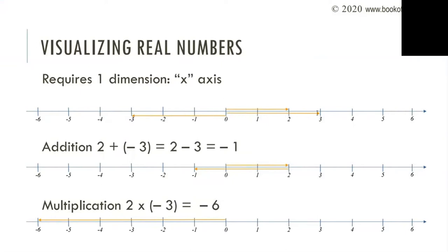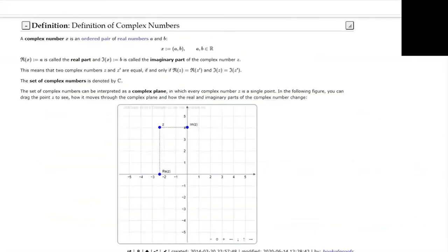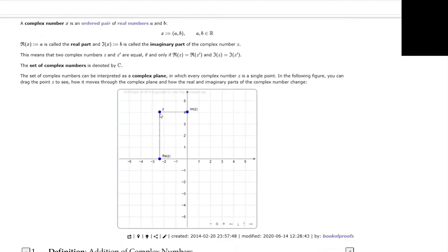Using JSXGraph, complex numbers are two-dimensional objects that can be visualized as points in a system of coordinates. Usually, we call the x-coordinate of a complex number the real and the y-coordinate of the complex number the imaginary part.